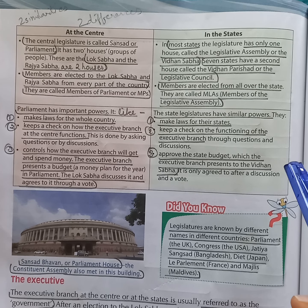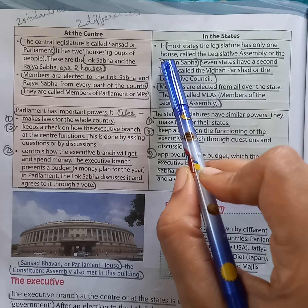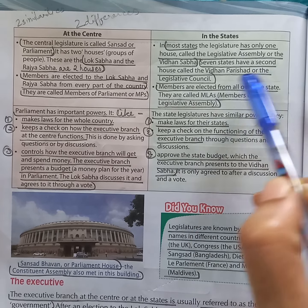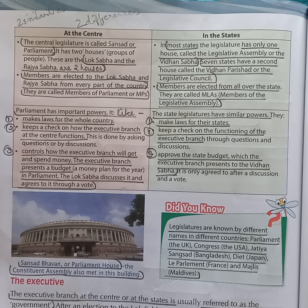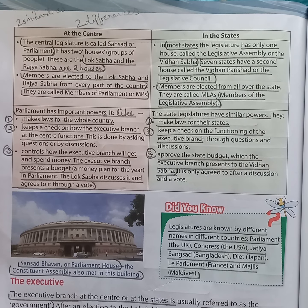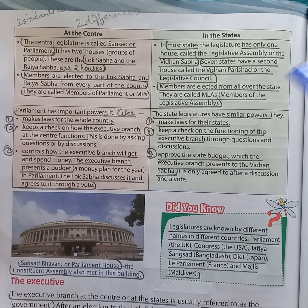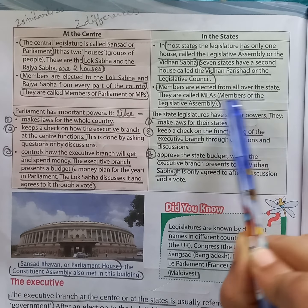Next question: how many houses are there in state legislatures? Answer: in most states there is only one house called the Legislative Assembly or the Vidhan Sabha, but seven states have a second house called the Vidhan Parishad or the Legislative Council. Members of Vidhan Sabha or Vidhan Parishad are elected from all over the state. The members of Vidhan Sabha or Vidhan Parishad are called the MLAs or Members of the Legislative Assembly.